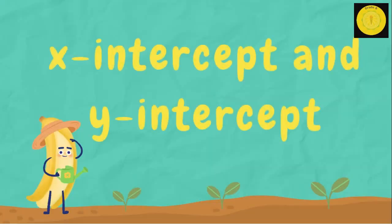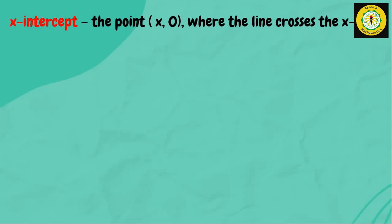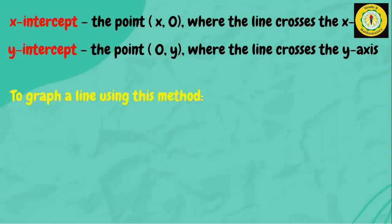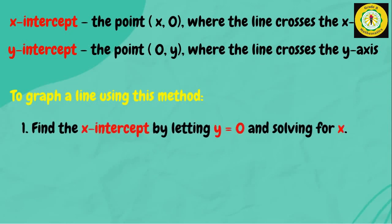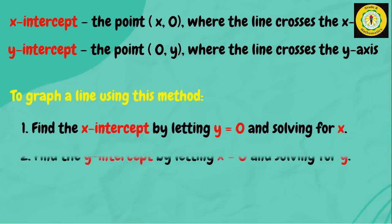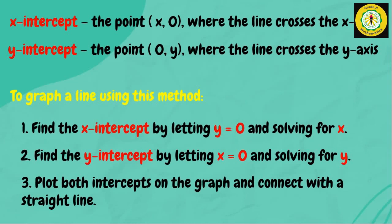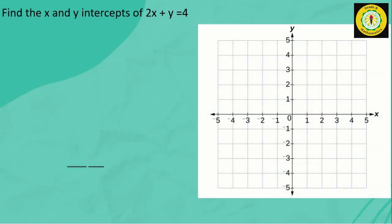Now let's graph linear equations given the x-intercept and y-intercept. The x-intercept is the point (x, 0) where the line crosses the x-axis. The y-intercept is the point (0, y) where the line crosses the y-axis. To graph using this method: first, find the x-intercept by letting y equal 0 and solving for x. Second, find the y-intercept by letting x equal 0 and solving for y. Third, plot both intercepts and connect with a straight line.